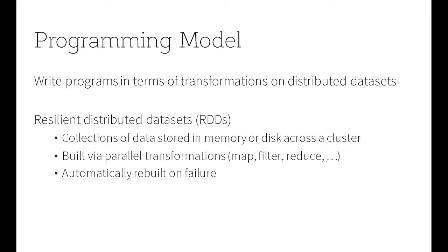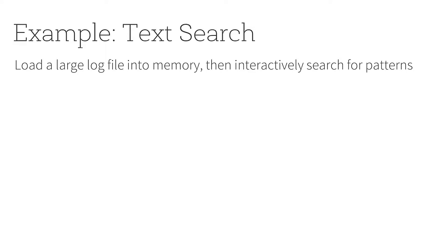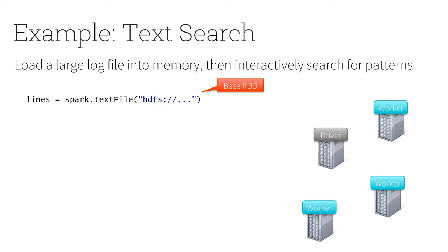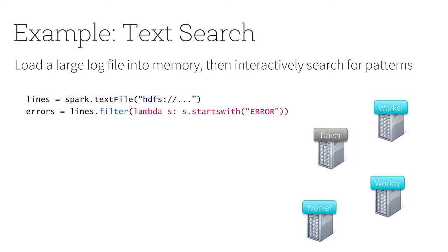As a really simple example of the API, here's some code in Python where we load a large log file — a bunch of text — into memory, then search for various patterns. We have a cluster with a master node called the driver and a bunch of workers. You can actually type this code interactively at the Python shell. You load a text file from the Hadoop distributed file system, which gives you a base RDD — a collection of strings, one for each line. Then you can do transformations, like pulling out only the error messages using a Python lambda function, and Spark will take it and run it on the cluster.